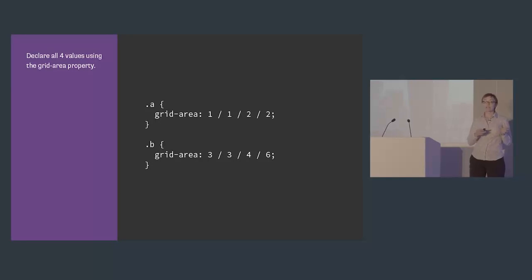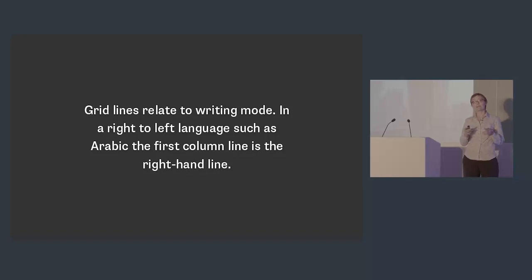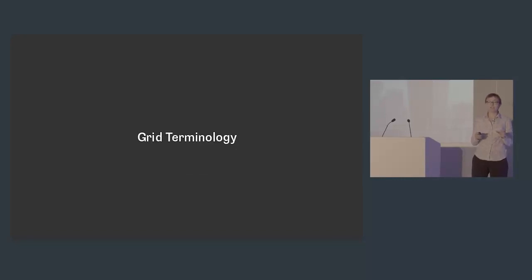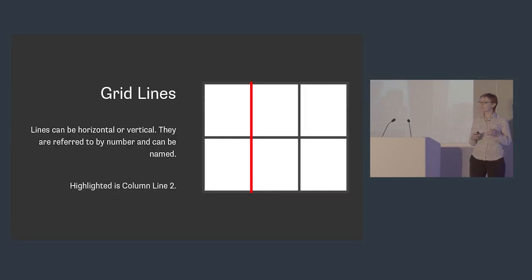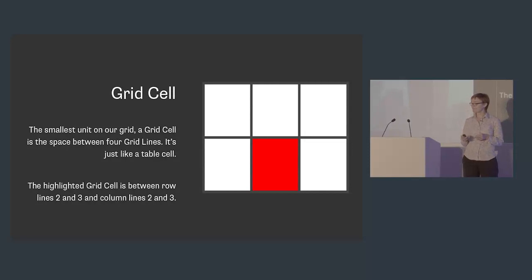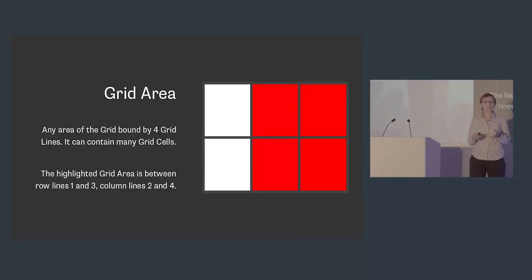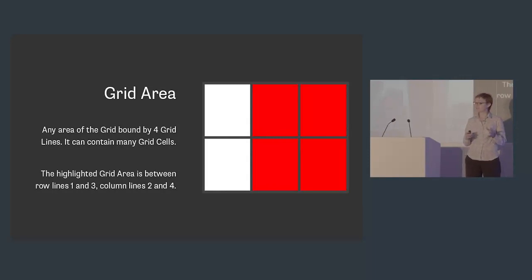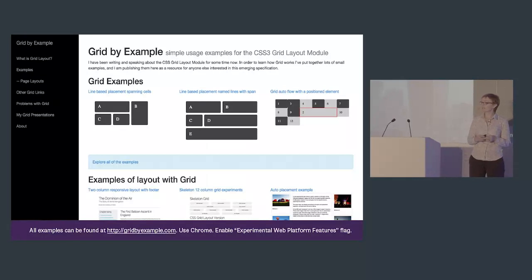Those are the basics of positioning items with grid. There's a little new terminology in this spec, as we found with Flexbox too. We've got grid lines — already seen those, numbered, horizontal or vertical, and they can also be named. We have grid tracks: any row or column between two lines. We have cells: conceptually just like a table cell, the smallest unit on our grid between four lines. And we have grid areas: any area on the grid bound by four grid lines, which can include many cells, defined just by setting start and end lines.